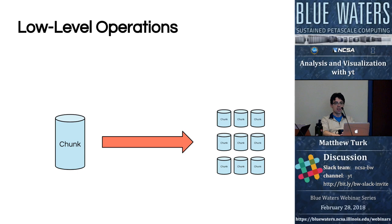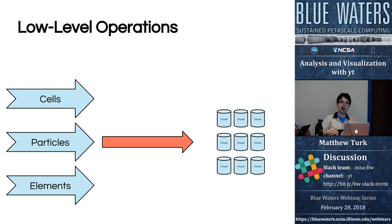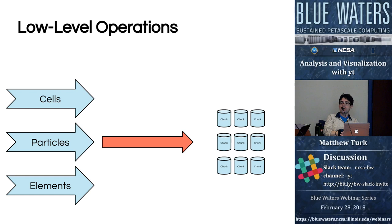For each low-level operation where we're operating on a chunk, we can actually split that chunk up into even smaller chunks if necessary, and those chunks can come from anywhere. One of the problems we aim to solve with YT is the abstraction of the distinction between different representations of data and the physical meaning of that data. Whether your data is cells with fixed space, particles with fuzzy boundaries, or elements requiring intracellular interpolation, you should still be able to ask the same questions about them in similar ways.